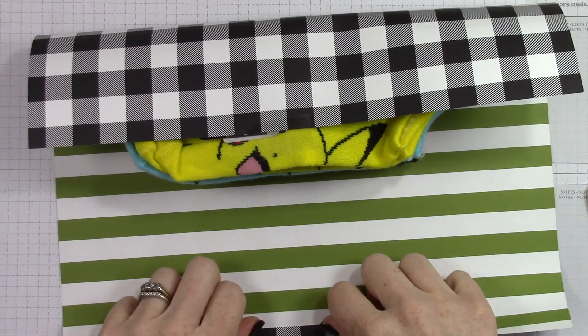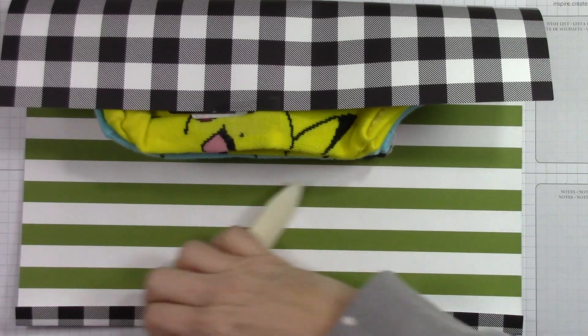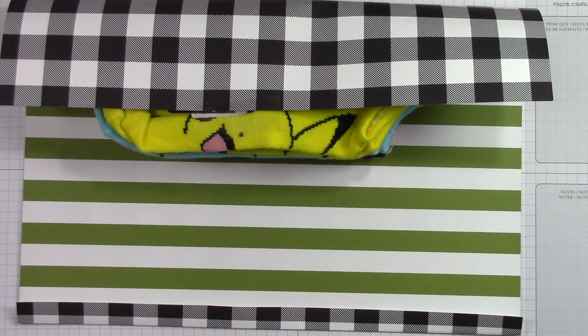So for these socks because they're smushy I didn't put them in a box or anything. I just simply wrapped my designer series paper right around the socks.